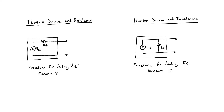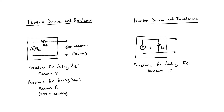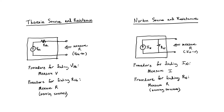Let's now find the Thevenin and Norton equivalent resistances of these two circuits. The procedure for finding the Thevenin equivalent resistance was to zero out all of the sources inside the circuit and then just measure the resistance looking in from the two terminals. Since this is already a Thevenin equivalent circuit, such a measurement would just yield the Thevenin equivalent resistance. The procedure for finding the Norton equivalent resistance is the same. We merely need to measure the resistance between the two terminals while zeroing out any sources. If we zero out our current source in the Norton circuit and measure the resistance, it's just going to be R sub N, the Norton equivalent resistance.